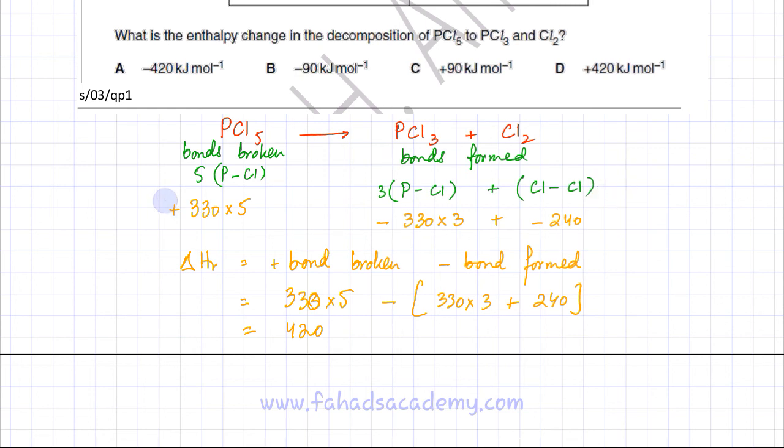If you sum up these values, the negative sign is automatically incorporated. Bonds broken are positive, bonds formed are negative. Add them up and that gives you 420, so the answer is option D.